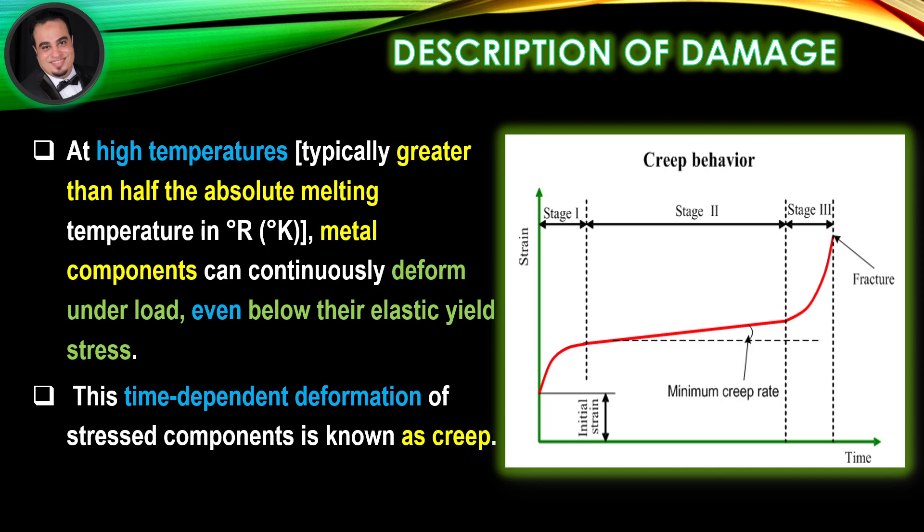In Stage 2, or secondary creep, the rate of creep becomes roughly steady. This stage is often referred to as steady-state creep.